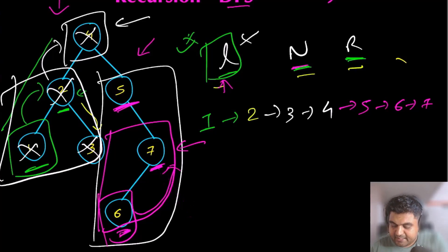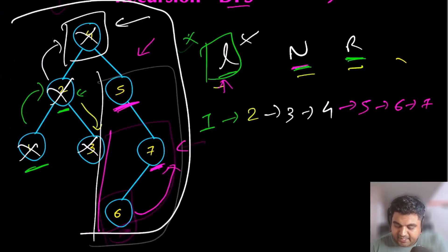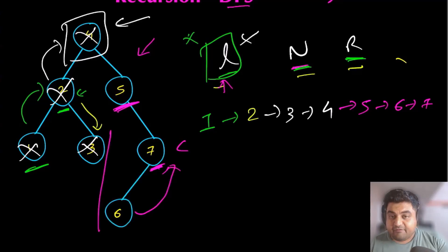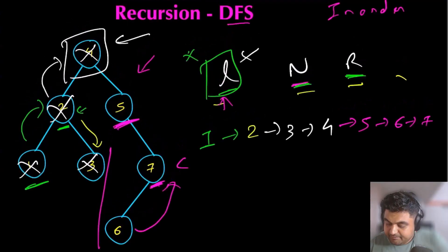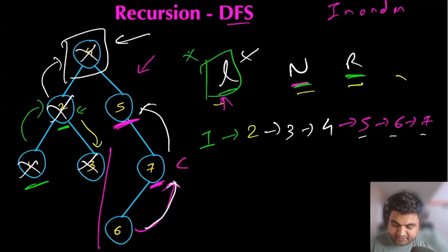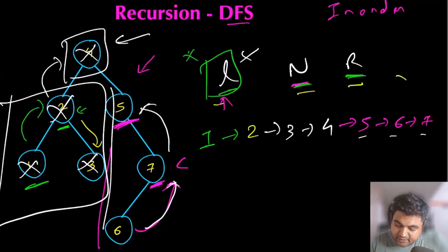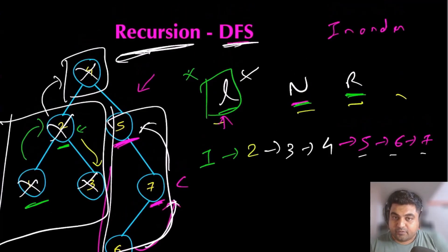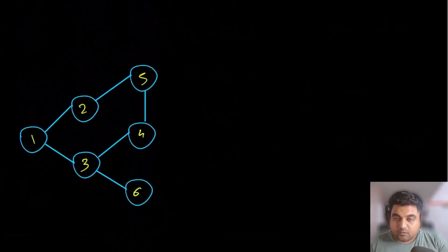Since node seven does not have any right child, we go back and we have now visited the entire tree. Every single time we mark nodes, we backtrack until we are done with every single node inside the given tree. Every single time we iterate over a new subtree, we call our recursive function to implement the depth-first search logic again. This is how recursion works on a tree.